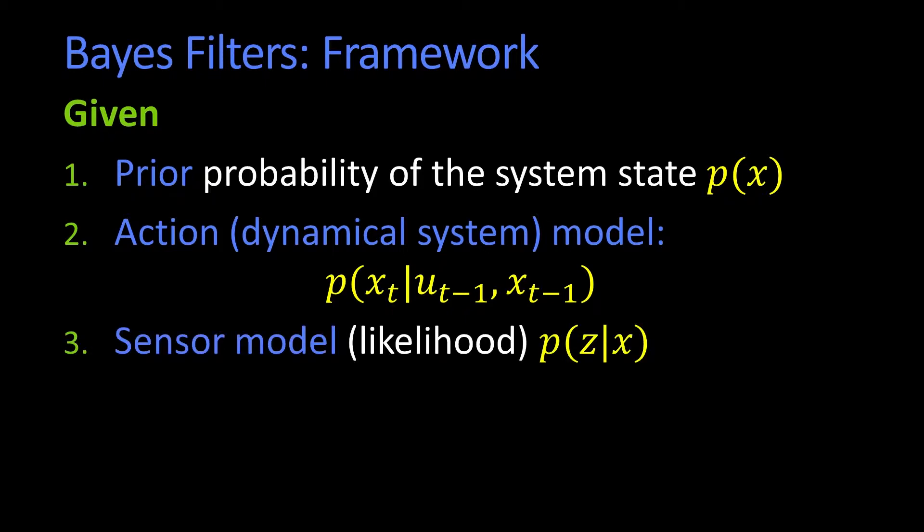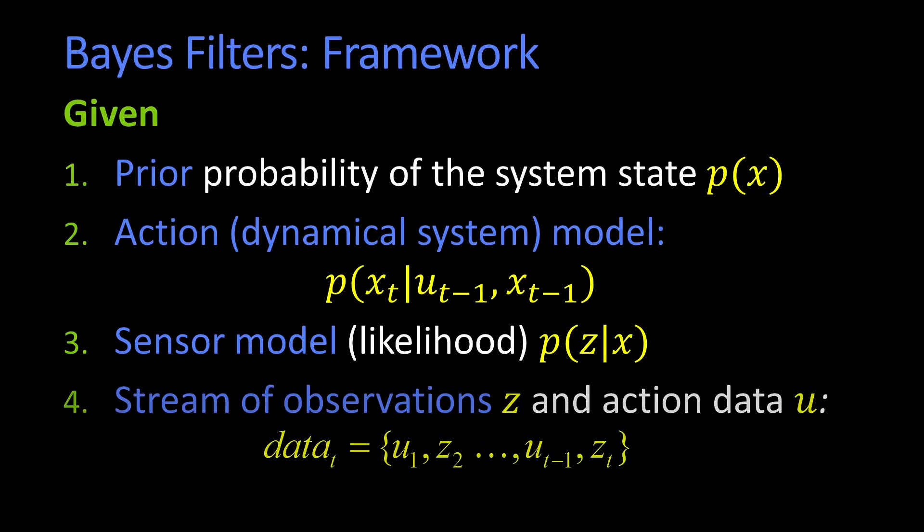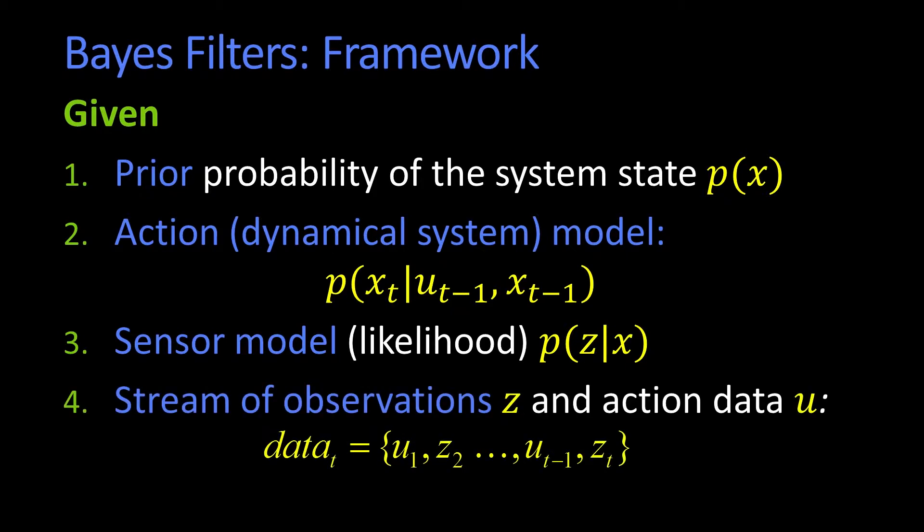We need a sensor model, remember a likelihood. That's not the probability of being someplace given a measurement. The likelihood is the probability of getting the measurement given what your state was. And then we need this stream of observations and the action data, the z's and the u's.